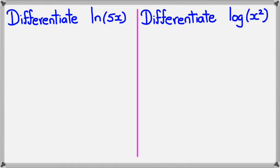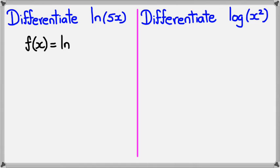I've set up two examples here: differentiate ln(5x), and differentiate log(x²). Now I know that ln and log are different things, but in terms of differentiation they follow the same principles. So for the first one, f(x) = ln(5x).